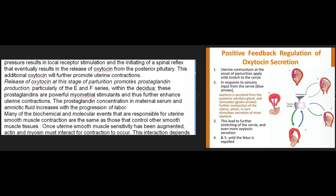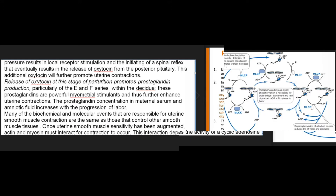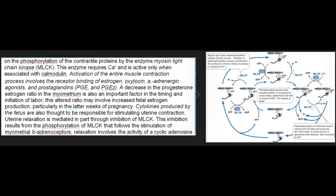The prostaglandin concentration in maternal serum and amniotic fluid increases with the progression of labor. Many of the biochemical and molecular events responsible for uterine smooth muscle contraction are the same as those controlling other smooth muscle tissues. Once uterine smooth muscle sensitivity has been augmented, actin and myosin must interact for contraction to occur. This interaction depends on the phosphorylation of contractile proteins by the enzyme myosin light chain kinase (MLCK), which requires calcium and is active only when associated with calmodulin.